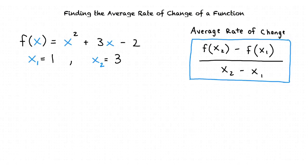This also reminds me of a formula used to find the slope between two points. That's a great observation — finding the slope and finding the average rate of change are two similar processes. When we find the average rate of change, we are essentially finding the slope of a line passing through the points (x1, f of x1) and (x2, f of x2).